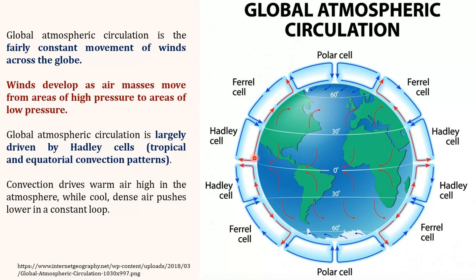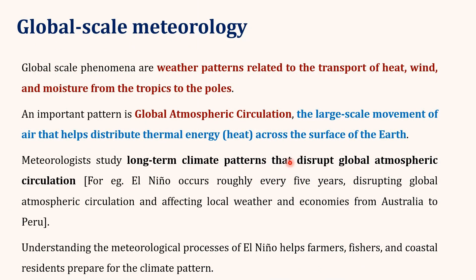In this image, red arrows represent warm air and blue lines represent cold air. At the equator, warm air rises into the atmosphere, forming clouds, while dry and cool air moves toward 30 degrees north and south and descends toward the ground at those latitudes. This convection drives warm air high in the atmosphere while cool dense air pushes lower in a constant loop. In global scale meteorology, meteorologists study long-term climate patterns that disrupt the global atmospheric circulation — for example, El Niño, which occurs roughly every 5 years, disrupts global atmospheric circulation and affects local weather and economies from Australia to Peru. Understanding El Niño helps farmers, fishers and coastal residents prepare for the climate pattern.